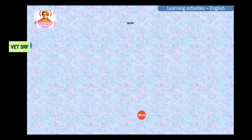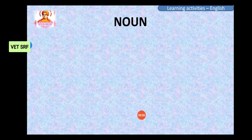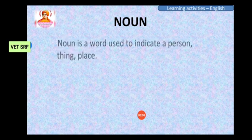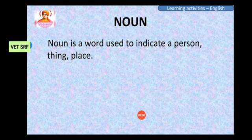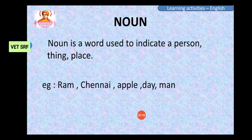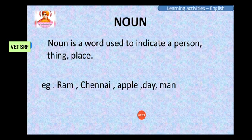Now we are going to see noun. Noun is nothing but the naming word is called noun. If you want to describe any person, you have to name that person. For example, Ram. Ram is a person. If that person we need to describe, we are using his name.